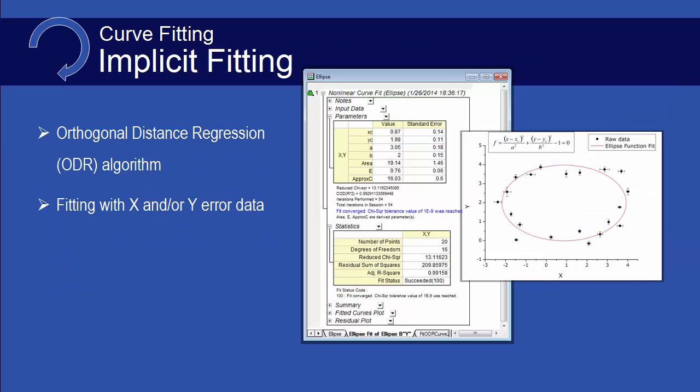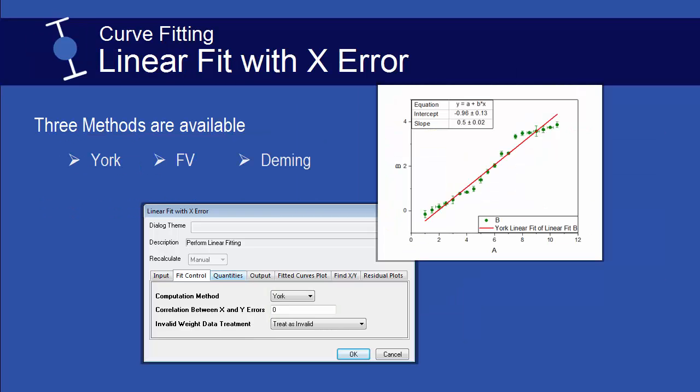Origin Pro also supports fitting with implicit functions using the Orthogonal Distance Regression algorithm, which minimizes the orthogonal distance from data to the fit curve. Errors and weights for both X and Y data are supported, and implicit functions can have two or more variables. In addition to using ODR method for nonlinear fitting, Origin Pro also offers three specific methods: York, FV, and Deming, to perform linear regression for both X and Y error bars.